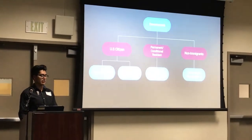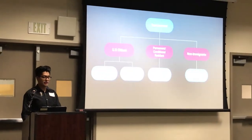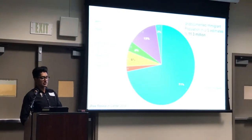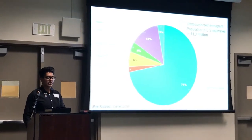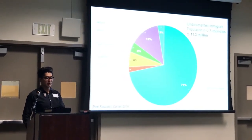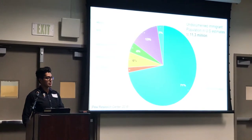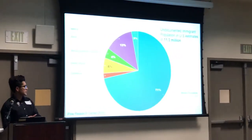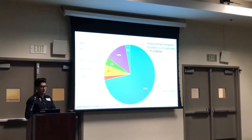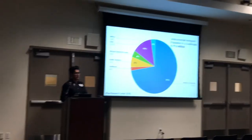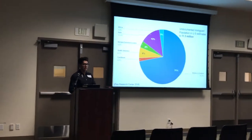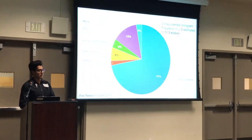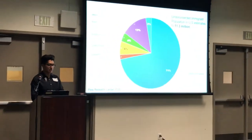Discussing the undocumented status, it was recorded in 2016 according to the U.S. Department of Education that the undocumented immigrant population ranges around 11.3 million. As you can see in the blue area, 71% originated from Mexico and Central America. As you can see in the purple, it's around 13.1% from Asia, and so on.